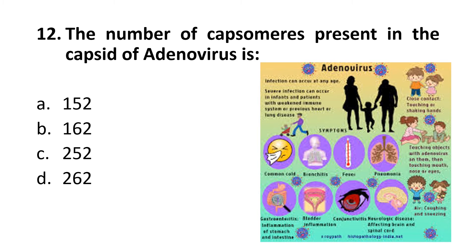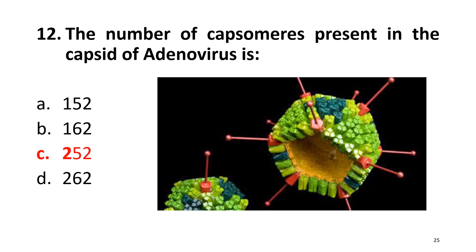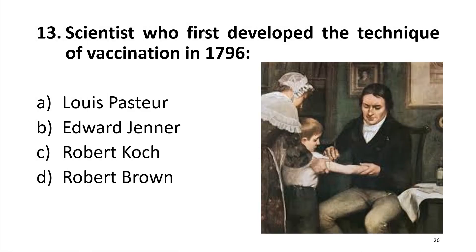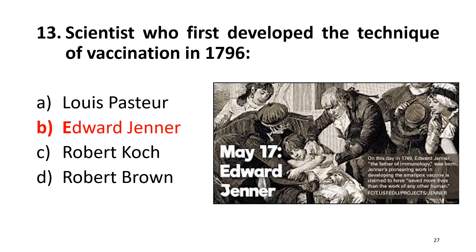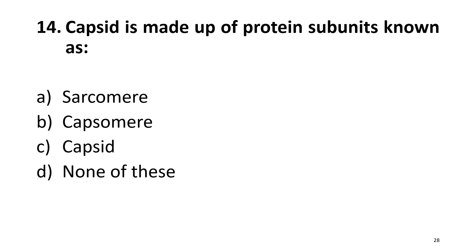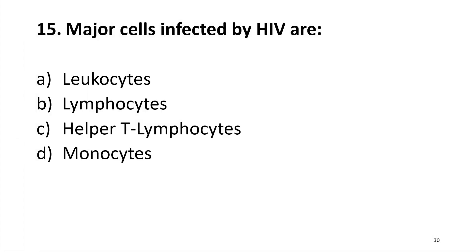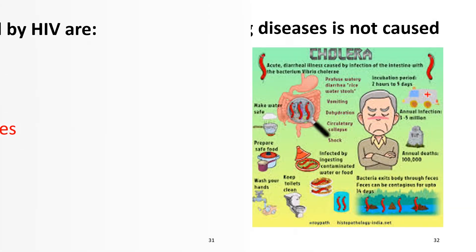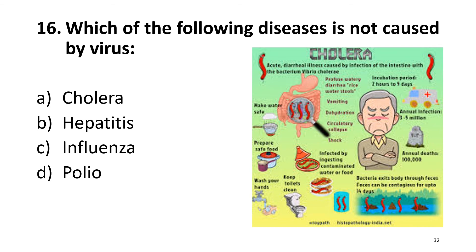Question 12: The scientist who first developed the technique of vaccination in 1796 was Edward Jenner, also called the founder or father of vaccination. The right answer is beta. Question 13: The protein capsule of a virus is made up of protein units known as capsomeres — the right answer is beta. Question 14-16: The major cells infected by HIV are helper T cells — right answer is Charlie. Cholera is not caused by viruses; it is caused by bacteria — right answer is alpha.